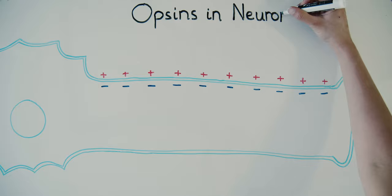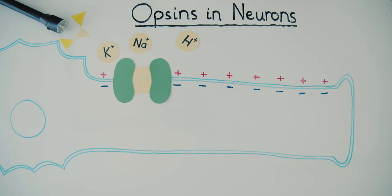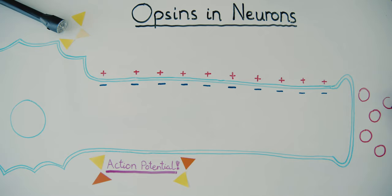By introducing opsins to neurons, we can control these electrical signals with light. By bringing in positive ions like sodium, potassium, and protons, opsins can make the inside of the neuron more positive. This sets off an action potential and fires the neuron.